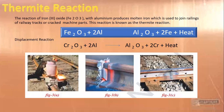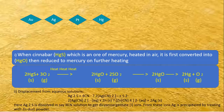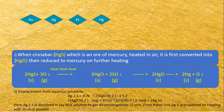In our previous class, one important process we learned is thermite welding or the thermite process. This is also a very important one — it is a kind of displacement reaction. Now we are at the extraction of the low-reactive metals.